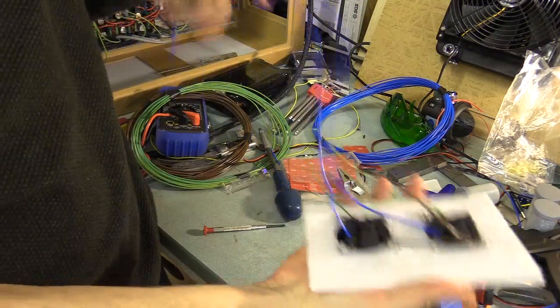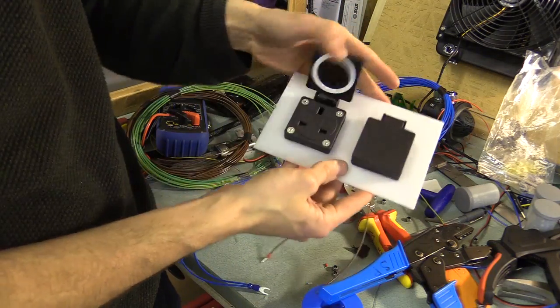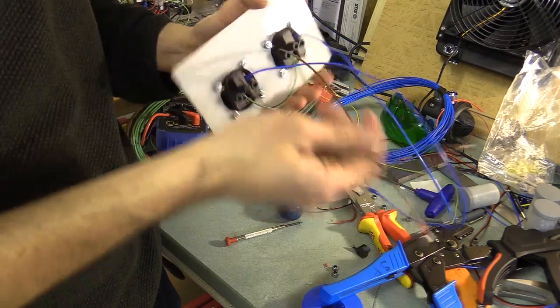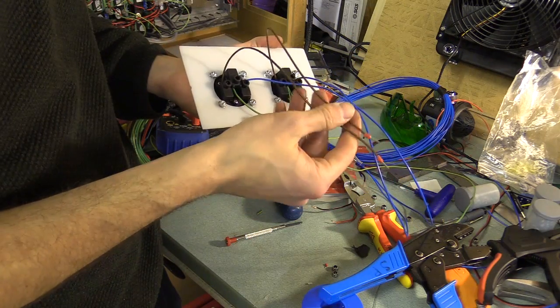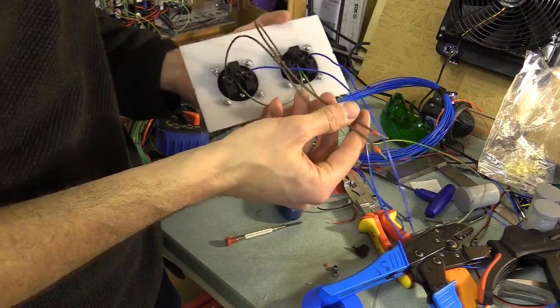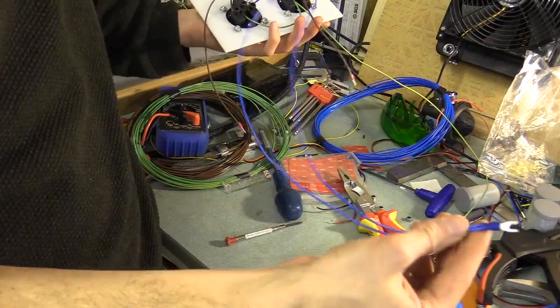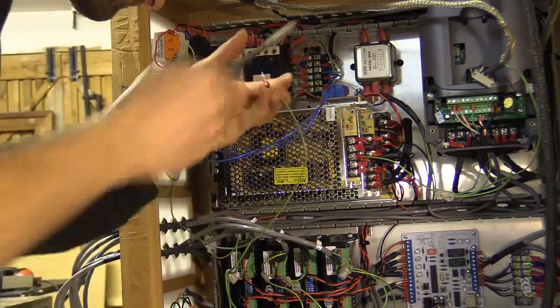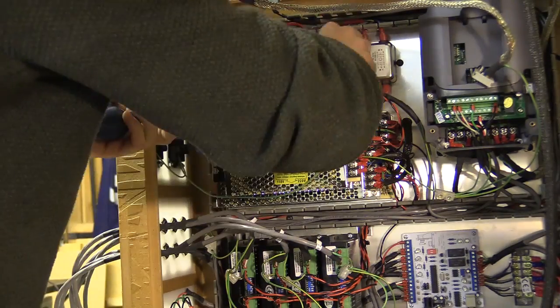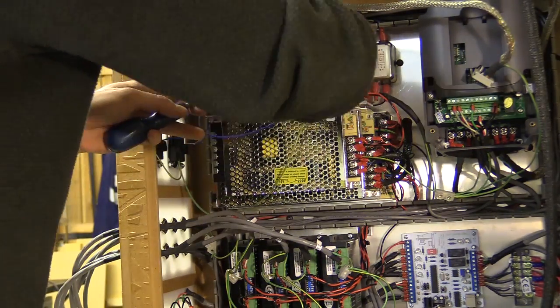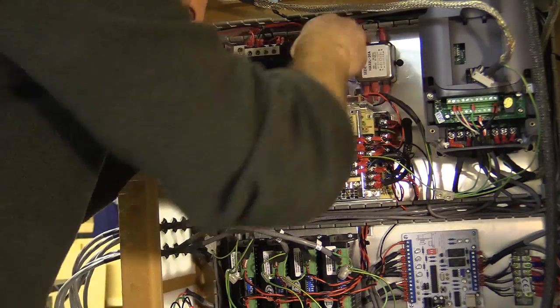OK this is the wiring for the front panel. These two go to the normally open terminals on the relay. These go to the terminal block or barrier block that's situated next to the motor contactor there, as well as the earth.